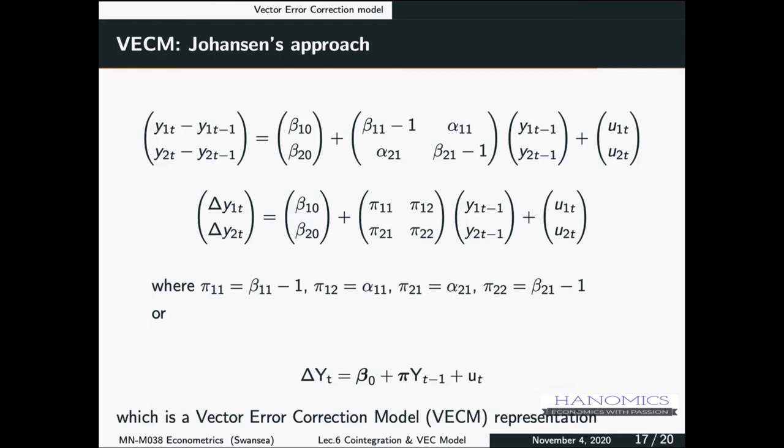This is the general form where we have delta Y2t. Y2t here is a vector of endogenous variables on the left-hand side, and then these are the Y2t-1 terms. The pi matrix here is very important when we come to the test of cointegration. What Johansen showed us is that we can do the same cointegration analysis in a VAR framework.